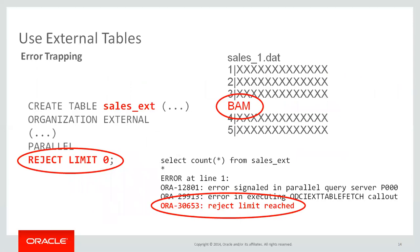Error trapping is a really nice feature of external tables. You can set a reject limit — so you can accept some bad records or accept none. If I don't accept any bad records and the data file has something bad in it, I immediately get an exception thrown. It's a nice mechanism to protect your data on the way in, ensuring that what you're loading is at a basic level clean and fits within your data model.